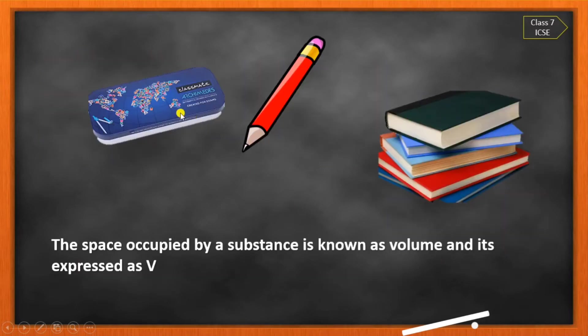Here is a geometry box, pencil, and here is a book. Definitely, books occupy more space. What is volume? Volume means the space occupied by the substance is known as volume. The space occupied by the substance is called volume, and it can be expressed as V.